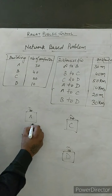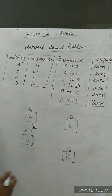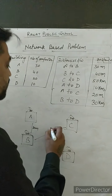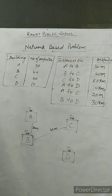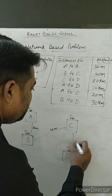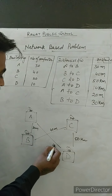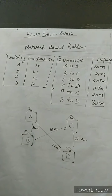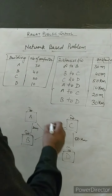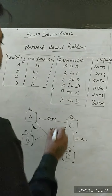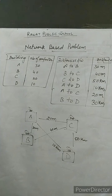Now join all the distances given: A to B is 30 meters, B to C is 40 meters, C to D is 50 kilometers, A to D is 10 kilometers, and A to C is 20 meters only. And B to D is 30 kilometers.